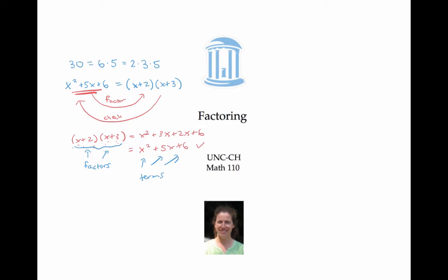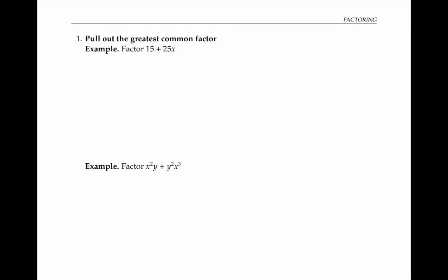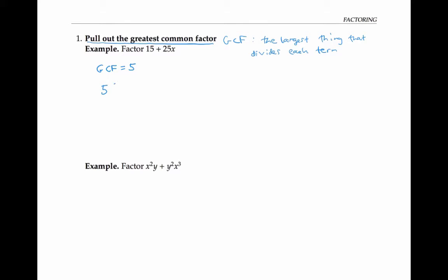Now let's get started on techniques of factoring. When I have to factor something, I always like to start by pulling out the greatest common factor. The greatest common factor means the largest thing that divides each of the terms. In this first example, the largest thing that divides both 15 and 25x is five. So the GCF is five. I pull the five out and divide each of the terms by that number, giving me three plus five x.